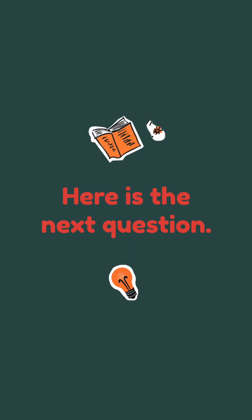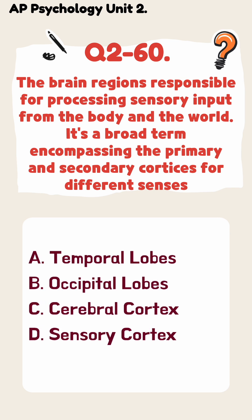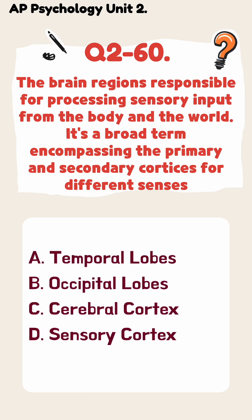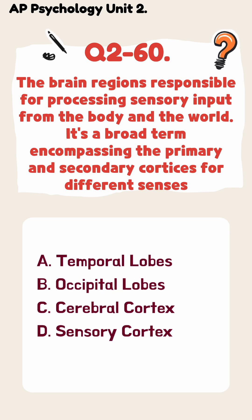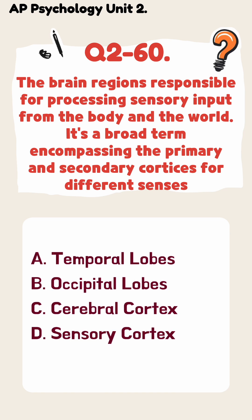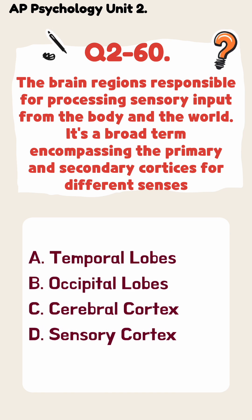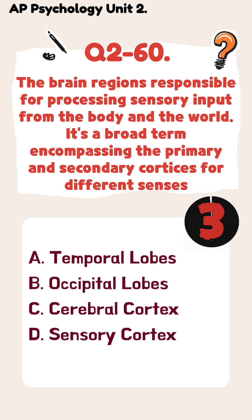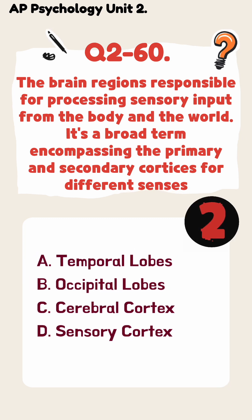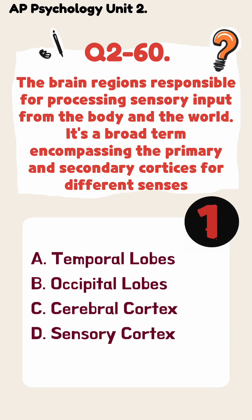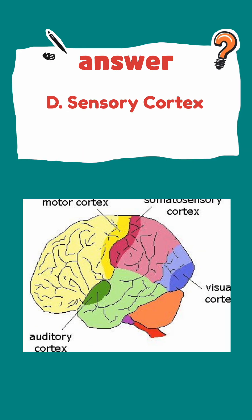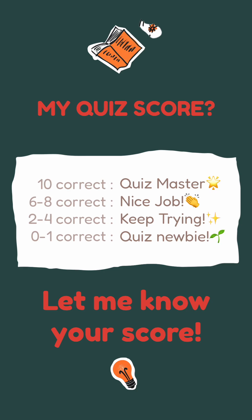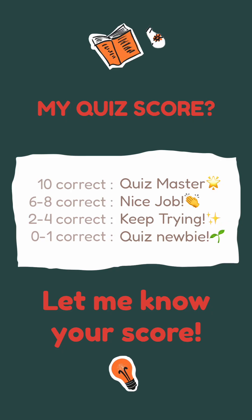Here's the next question. The brain regions responsible for processing sensory input from the body and the world; it's a broad term encompassing the primary and secondary cortices for different senses. The answer is sensory cortex. Comment your score below to see how you rank against others.